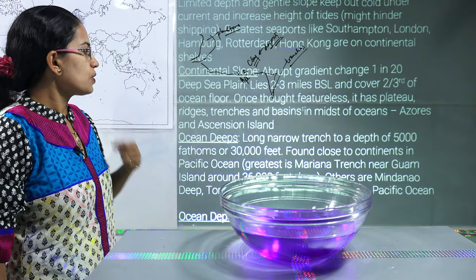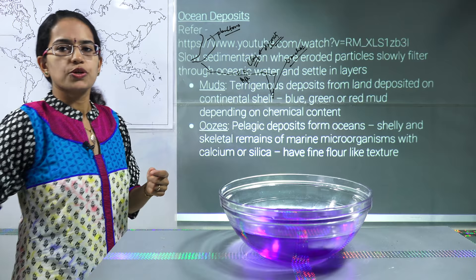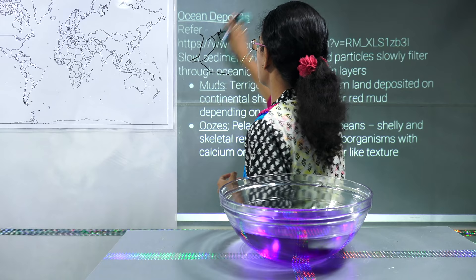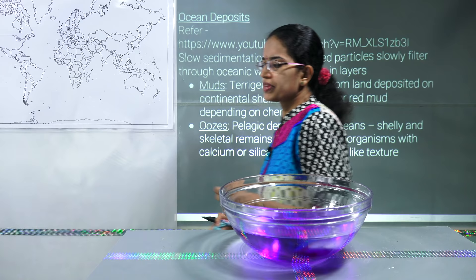As we saw, you have an ocean surface, and when you have an ocean surface there would be some kind of deposition. We classify this deposition under three heads: mud, ooze, and clay. Now clay is the most straightforward one.